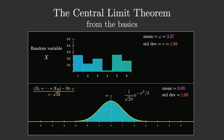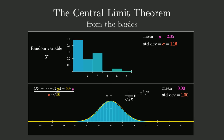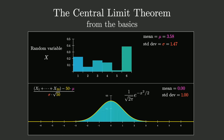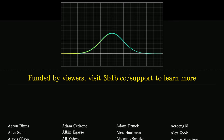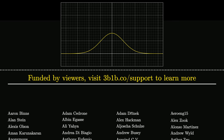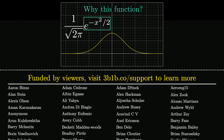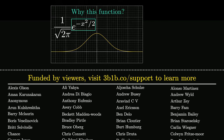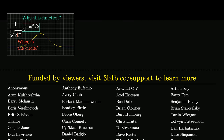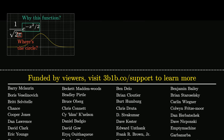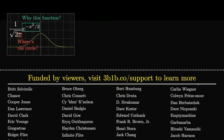If you've understood everything up to this point, you now have a very strong foundation in what the central limit theorem is all about. Next up, I'd like to explain why it is that this particular function is the thing that we tend towards, and why it has a pi in it — what it has to do with circles.